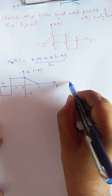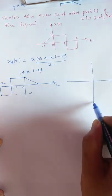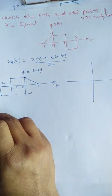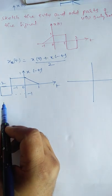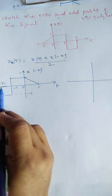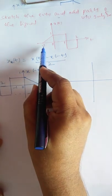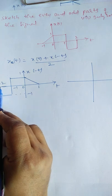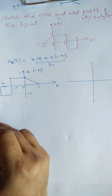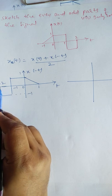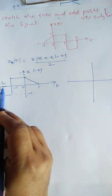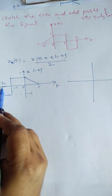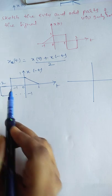To add these two signals, we always start from minus infinity to plus infinity. x(-t) exists from minus 2 to plus 1, whereas x(t) exists from minus 1 to plus 2. Starting from minus 2, because less than minus 2 both signals do not exist. Going interval by interval: from minus 2 to minus 1, only x(-t) exists. The value of this signal in that interval is minus 1.